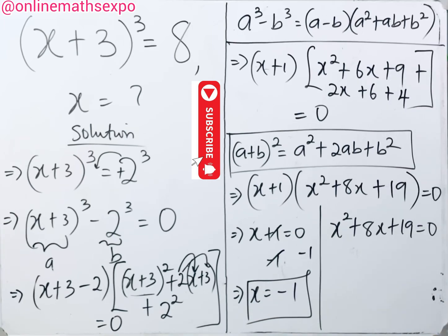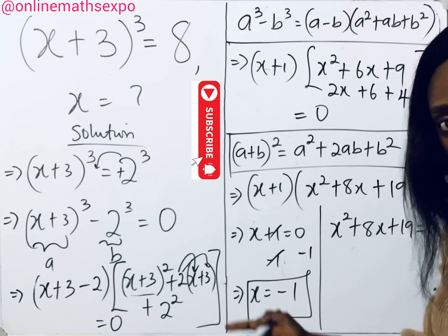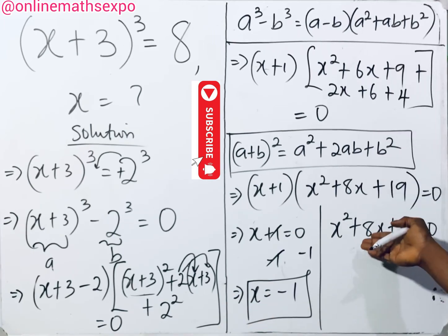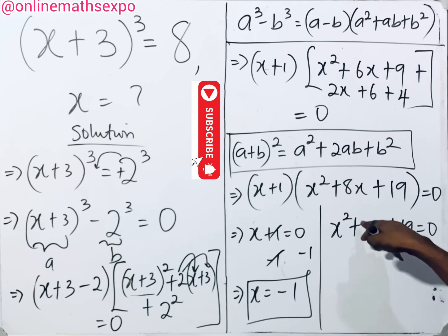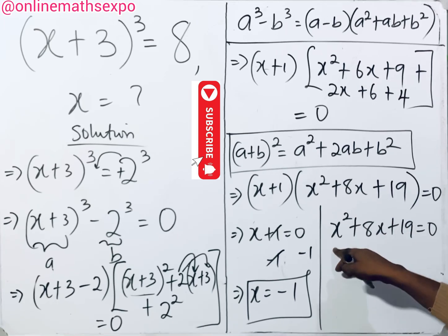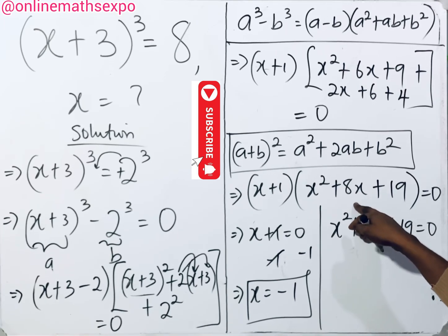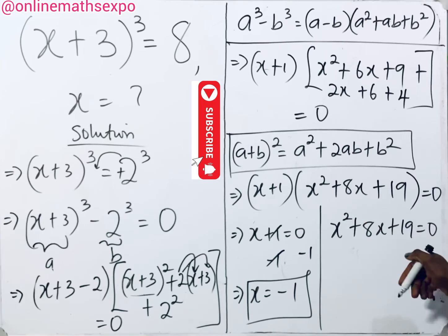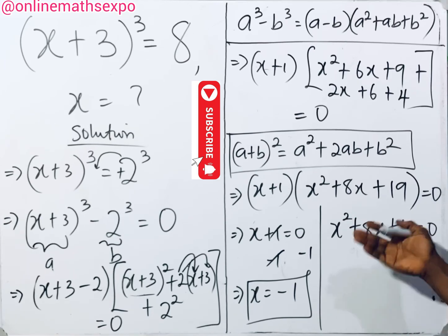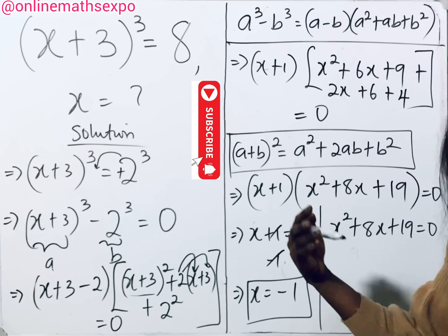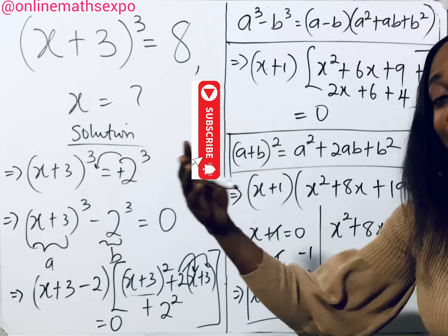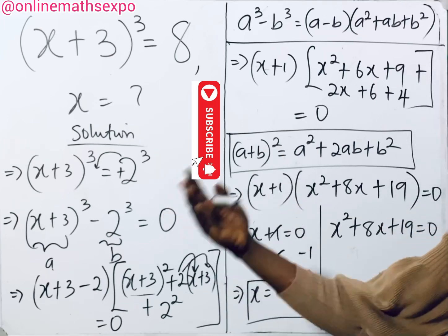When these two factors equal zero, either x + 1 = 0 or x² + 8x + 19 = 0. For the first: subtract 1 from both sides, so x = −1. That's one of our solutions. The second equation is quadratic — the highest power of x is two — so we solve it separately.